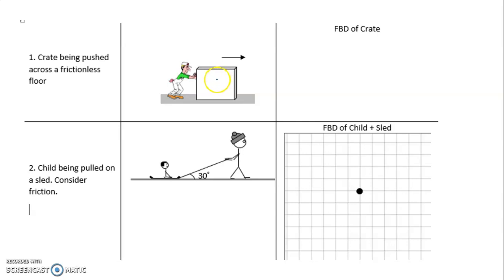So the first thing is to make sure you identify what the object is. And so we are analyzing the crate and it's already labeled here. If it wasn't already labeled I would be writing it down. We represent the object just as a dot, a free body.